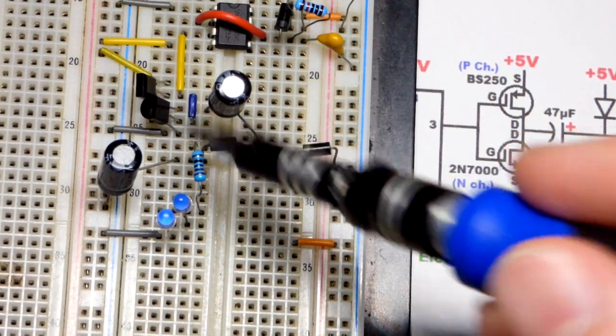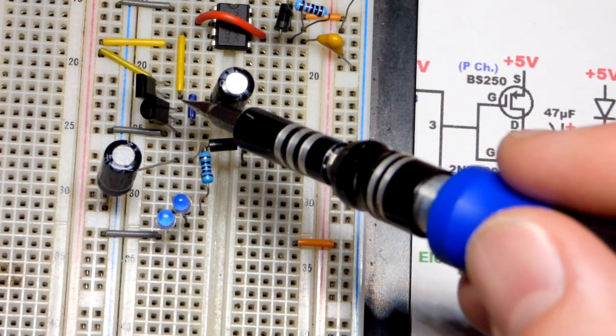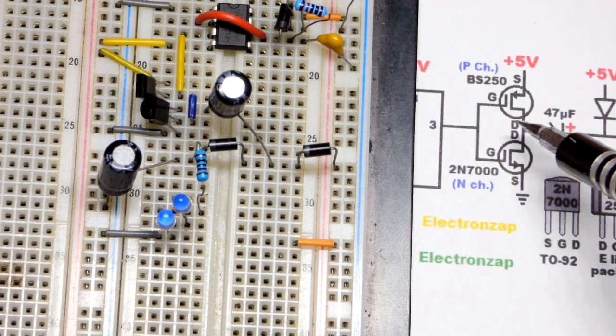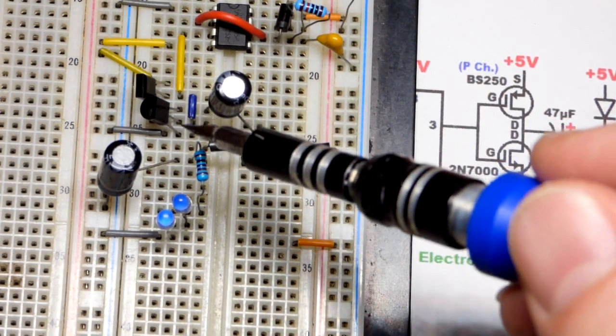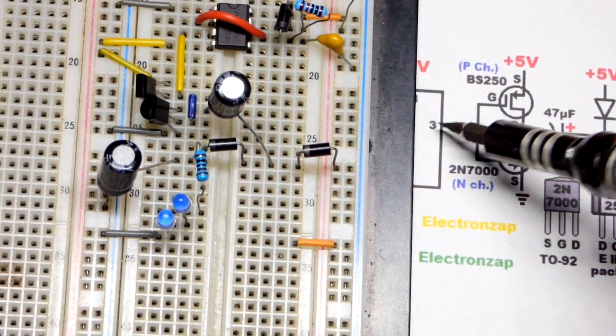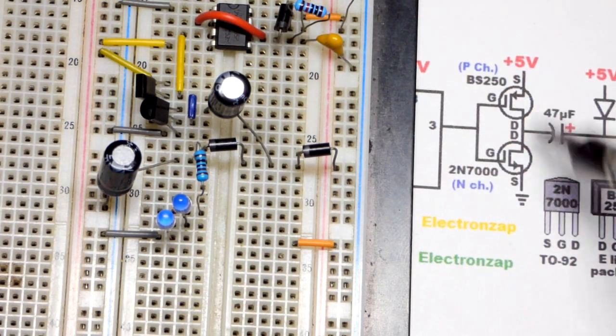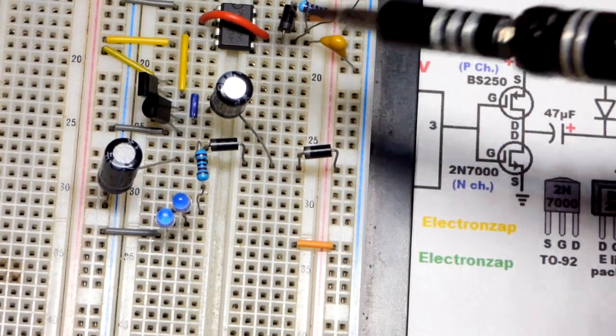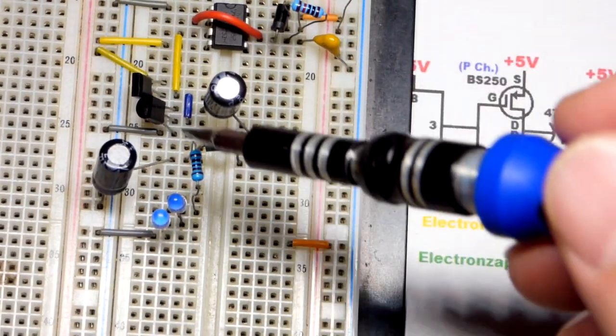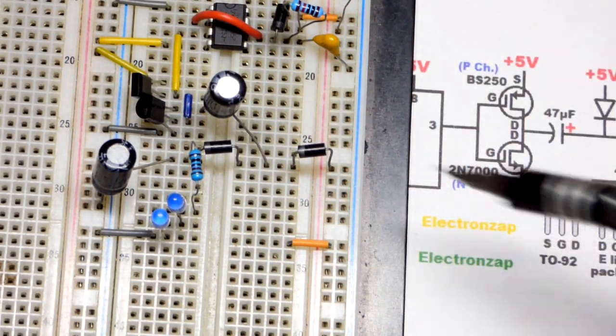We have the drain of both of them right there to the negative side of that capacitor. The gates are both right next to the drain in the center. I got a little jumper connecting the two gates together, and another jumper going to the output of the 555. The sources for both of them go to the supply voltage. Top pin for the BS250 to the positive supply, and the bottom pin of the 2N7000, the source, is going to the negative supply.